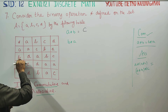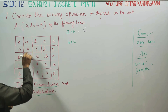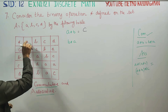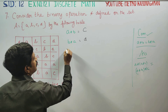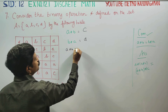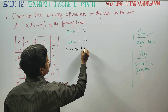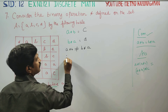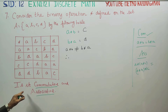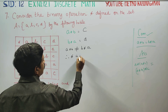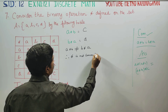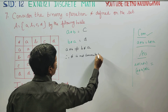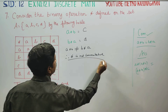Now checking b★a from the table. Comparing a★b and b★a using the table values — a★b is not equal to b★a. Therefore we examine whether the operation is commutative or associative based on this result.